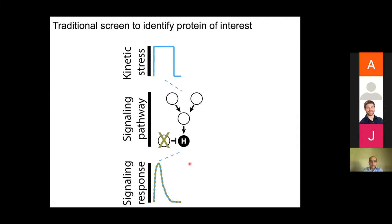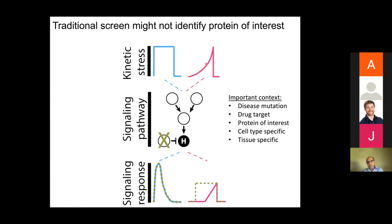Alternatively, if we do a screen and compare a wild-type strain to a deletion strain and look for the response, usually we hope there is a difference. But if we don't see a difference, we think that protein is not important for the pathway. However, we could have a situation where using a different type of perturbation reveals a significant difference between wild type and mutant strain. This is important for understanding disease mutations in a physiological context, how drugs function, and could help develop more targeted drugs and identify novel proteins not previously identified in a specific pathway.